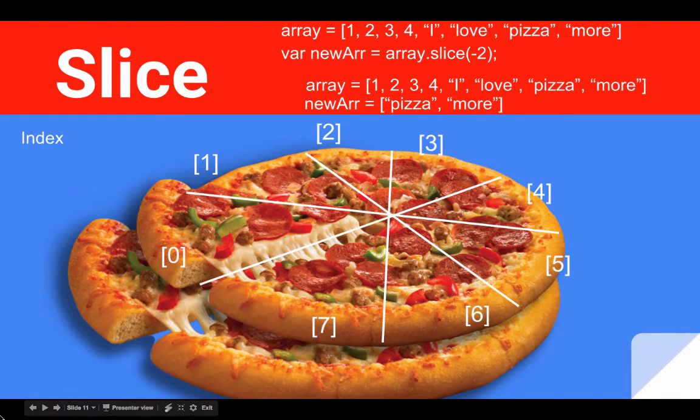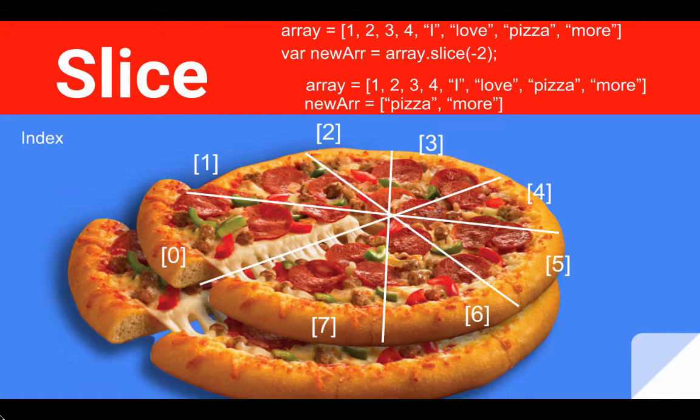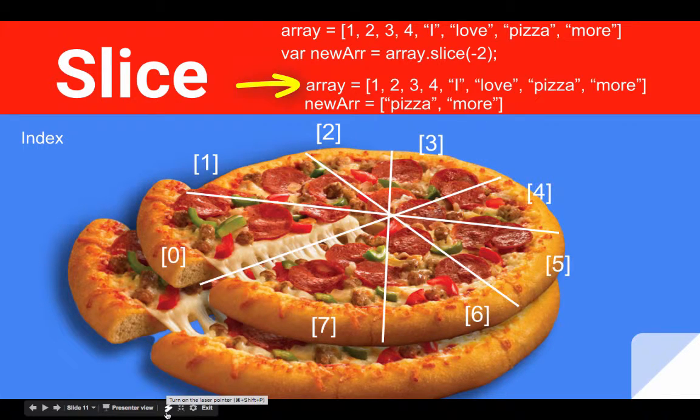But remember, we're not actually removing these elements from the original array. We're making a copy of a portion of the elements. We always leave our original array untouched when we perform the slice method. So what we end up with after performing the slice method on the original array is the original array itself with all of the elements: one, two, three, four, I love pizza more. And our new array.